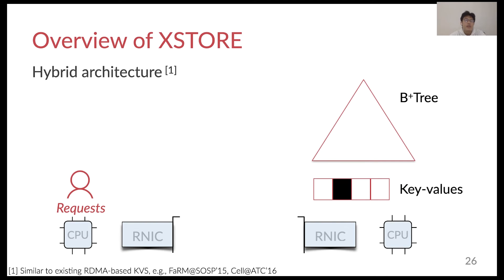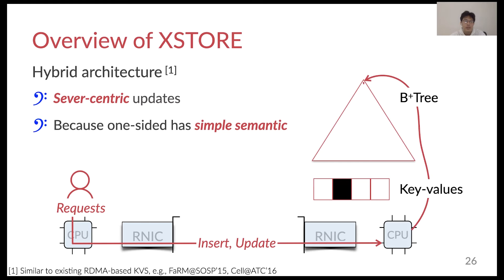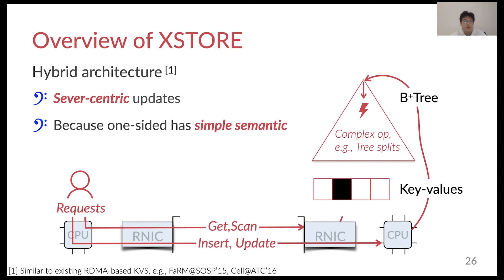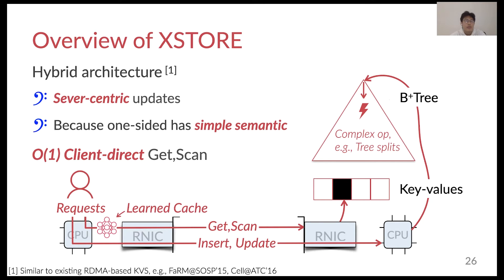Here is an overview of the architecture of XDoor. First, we adopt a hybrid architecture. This means that update operations such as insertions are handled by the server RPC. We adopt this hybrid approach like many prior RDMA-based key-value stores, because the NIC's simple semantics cannot support complex update operations like tree splits during insertions. For read-only operations such as get and scan, we follow the client-direct design, which uses one-sided RDMA to execute them.